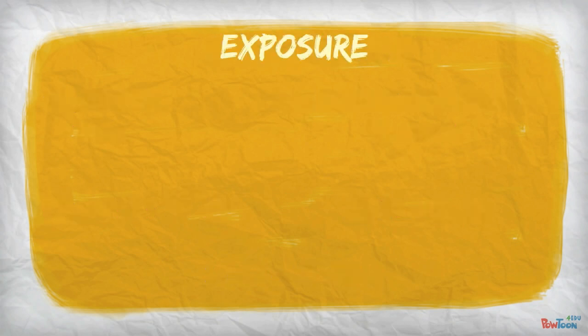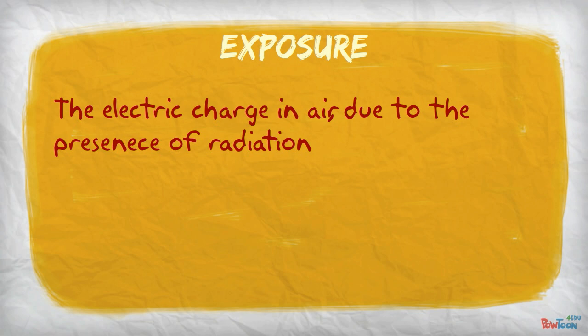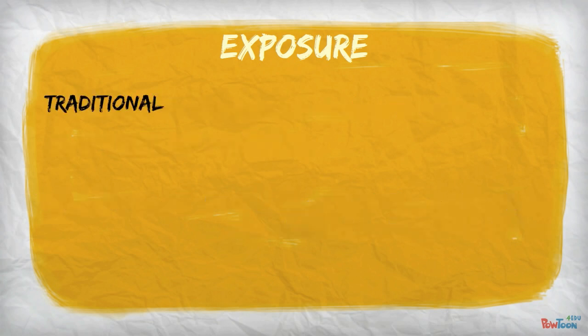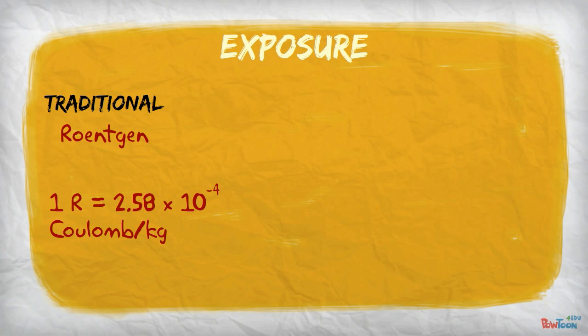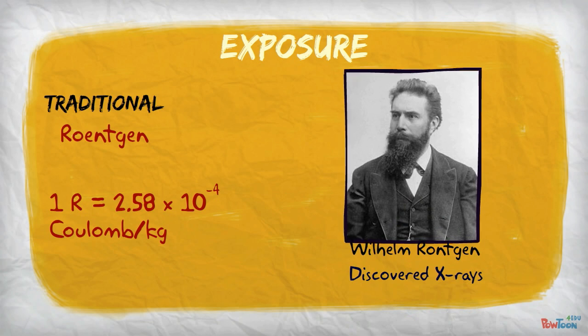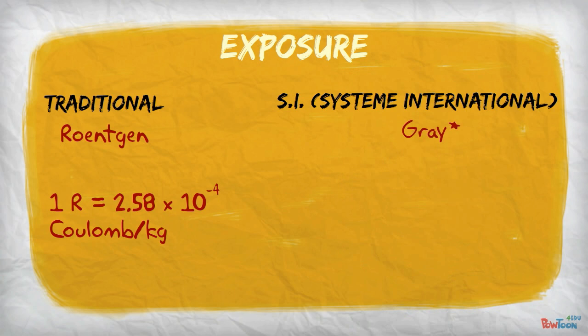Next is exposure. This is basically defined as the electric charge in air due to the presence of radiation. Put another way, it is the total sum of the kinetic energy of the charged particles which are liberated by uncharged radiation. The traditional unit of exposure is the Röntgen. One Röntgen is equal to 2.58 times 10 to the negative fourth coulombs per kilogram. The unit is named after Wilhelm Röntgen, who was the discoverer of X-rays. The SI unit for exposure is the gray. One gray is equal to one joule per kilogram.